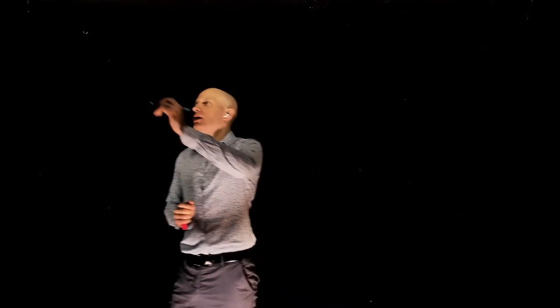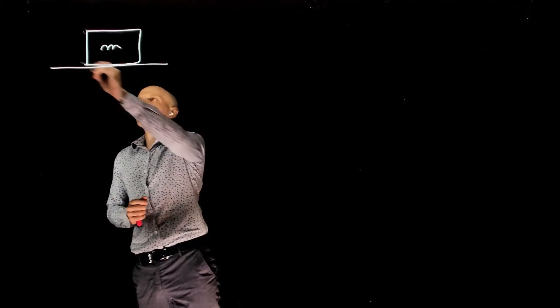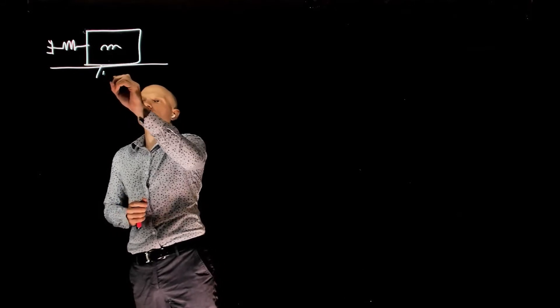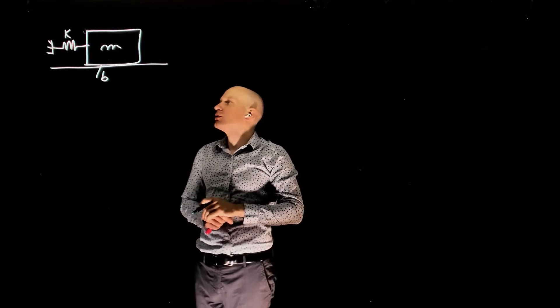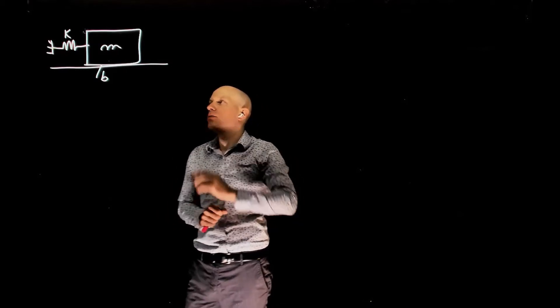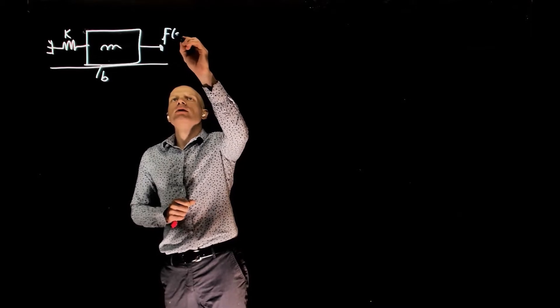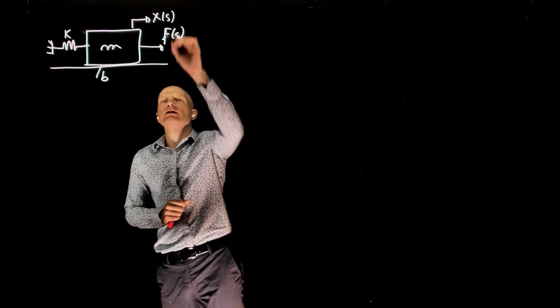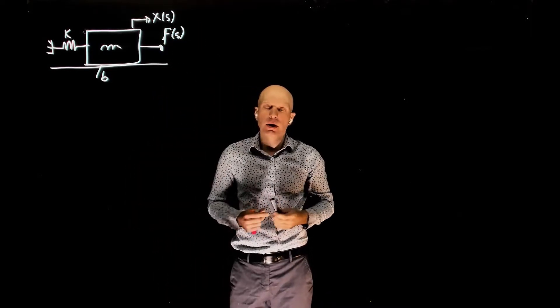Let's cover one last example of steady state error. For this example, consider a mass-spring-damper system: a mass that slides on a plane with friction b. The mass is connected to a spring with stiffness coefficient k. A force f is applied to the mass and the output is the displacement x. The objective is to apply a force to the mass and make it move by a certain amount.